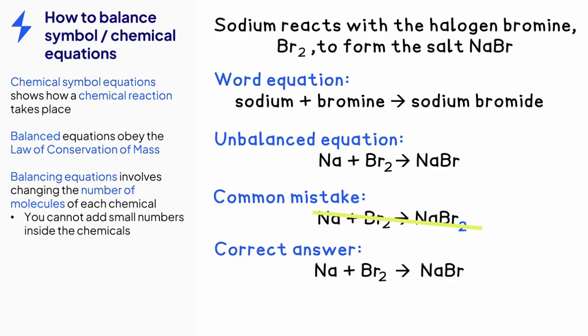So, to correctly balance the equation, you should consider the amount of each chemical. It can help to draw out the chemicals. We have one sodium atom and one bromine molecule, forming one sodium bromide molecule.